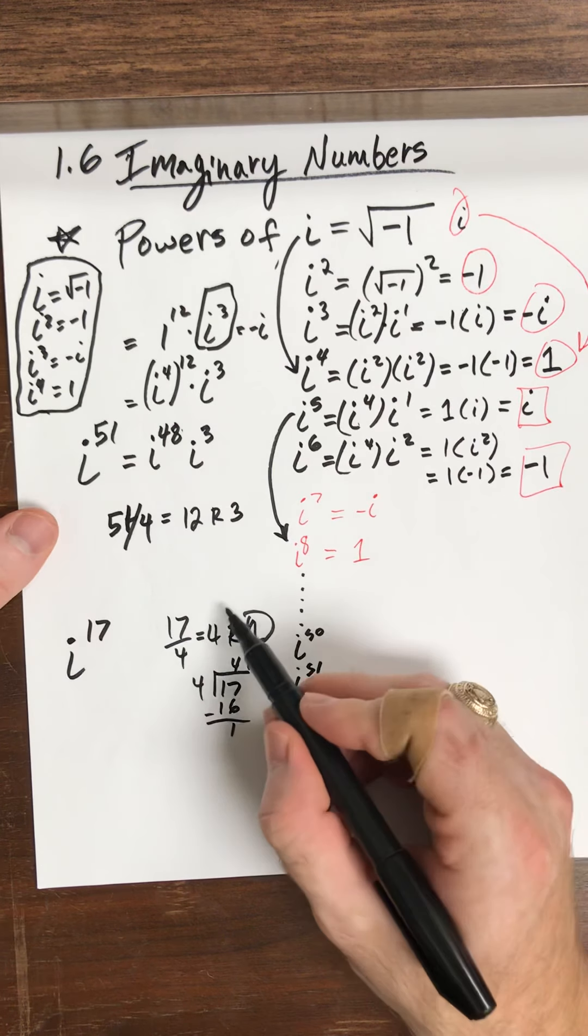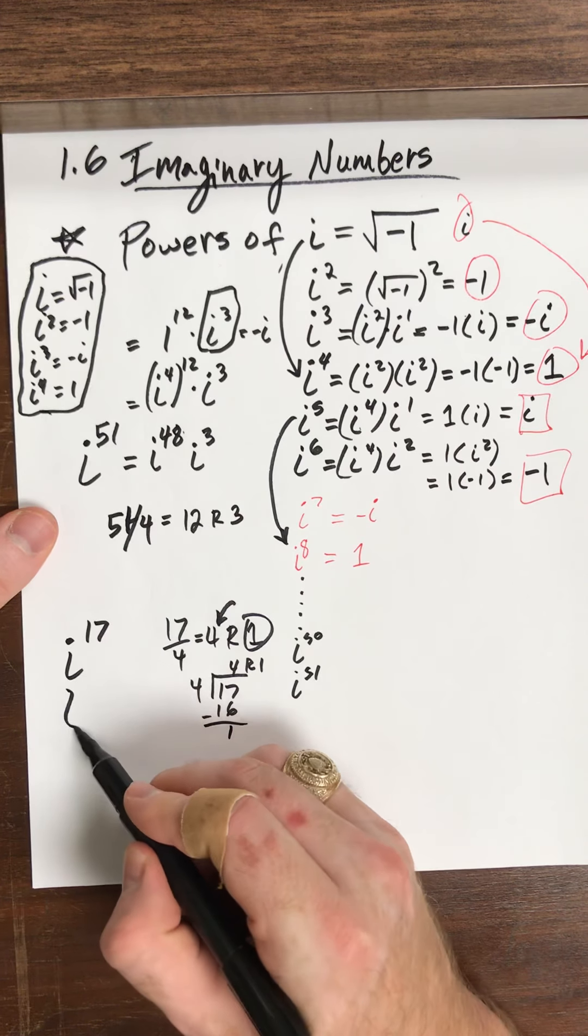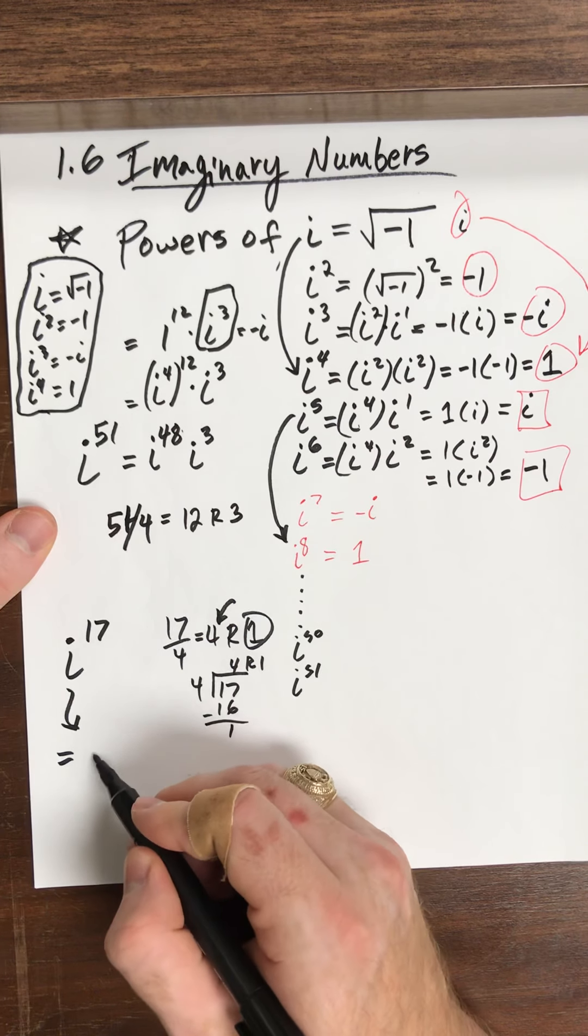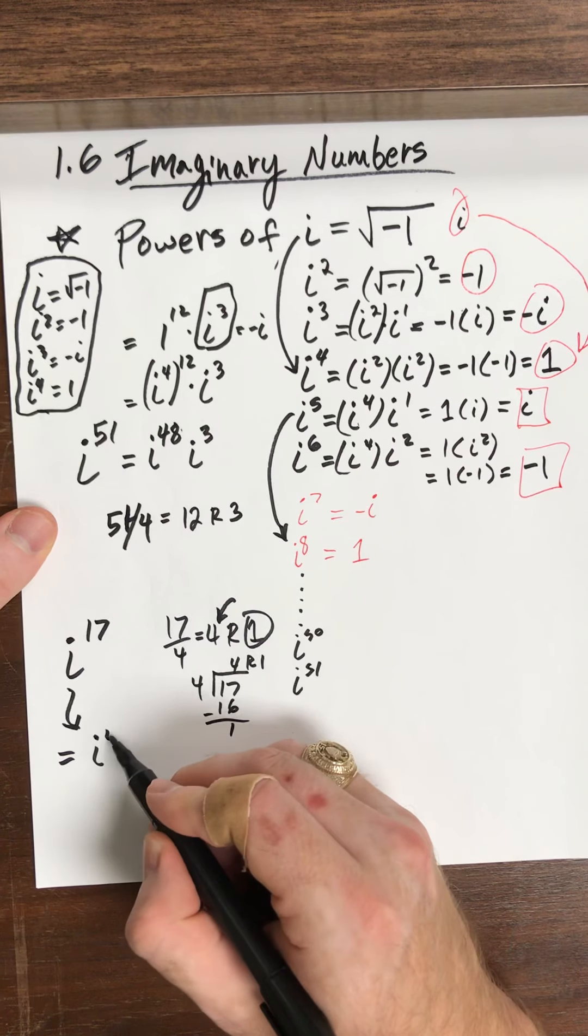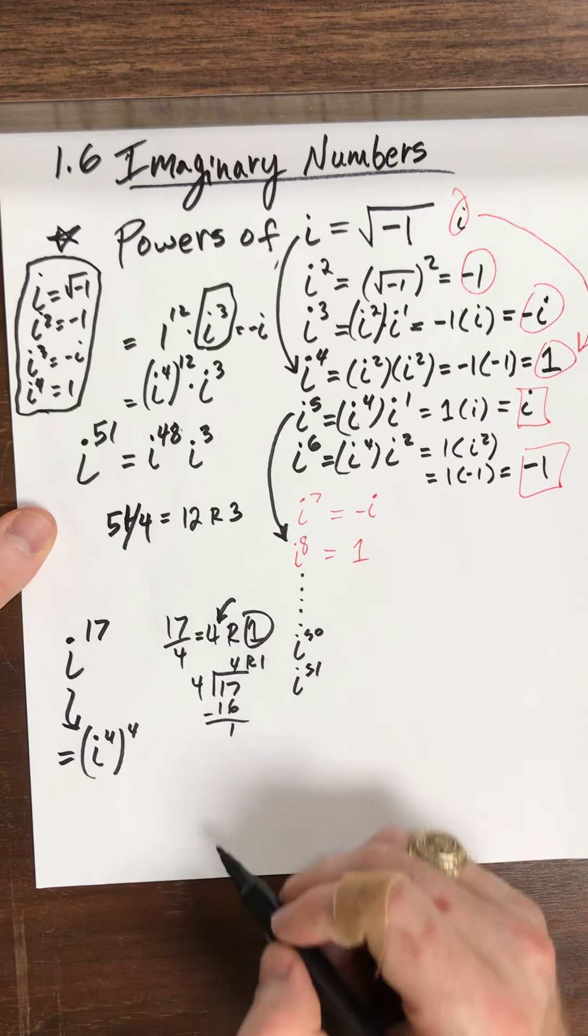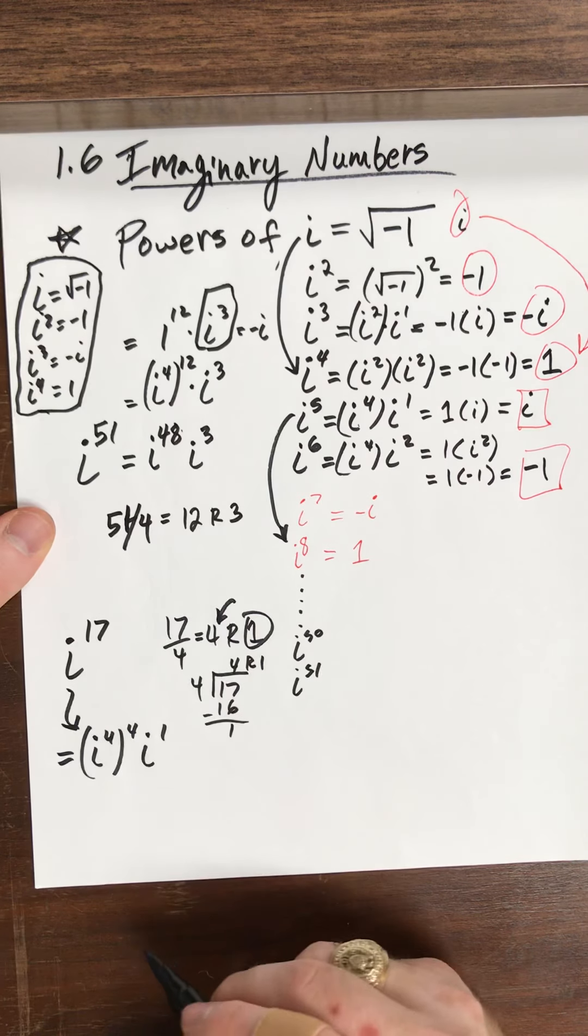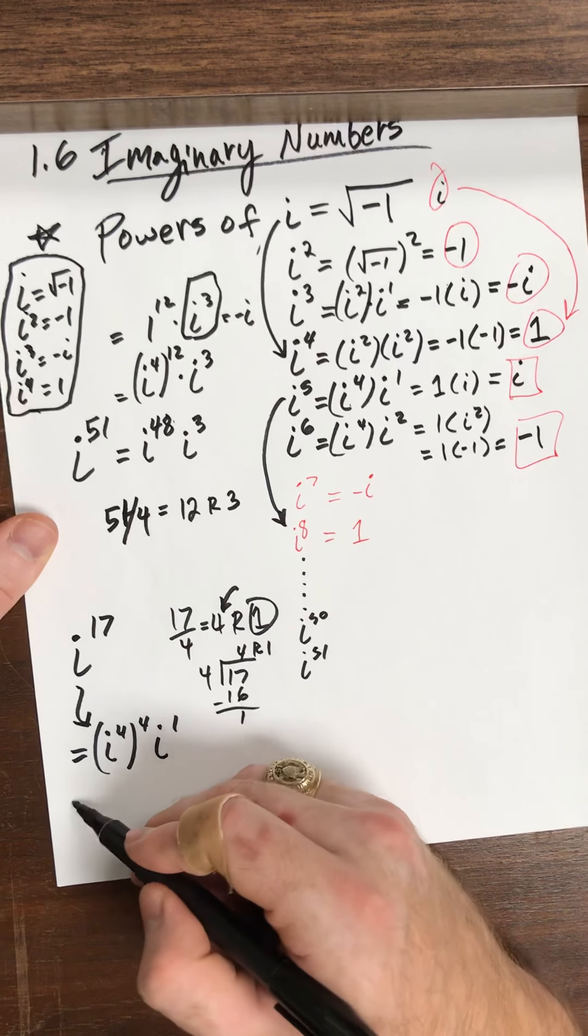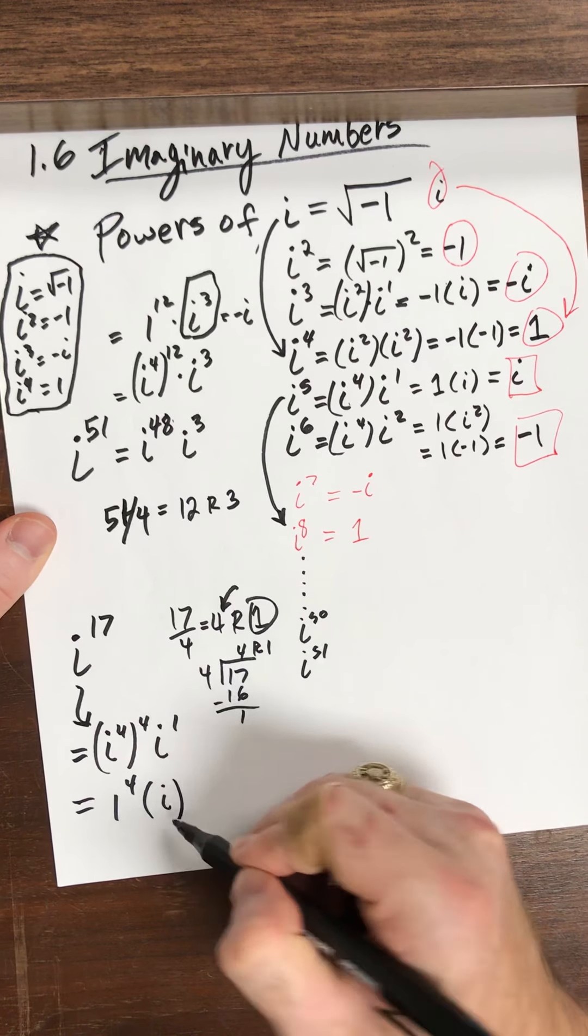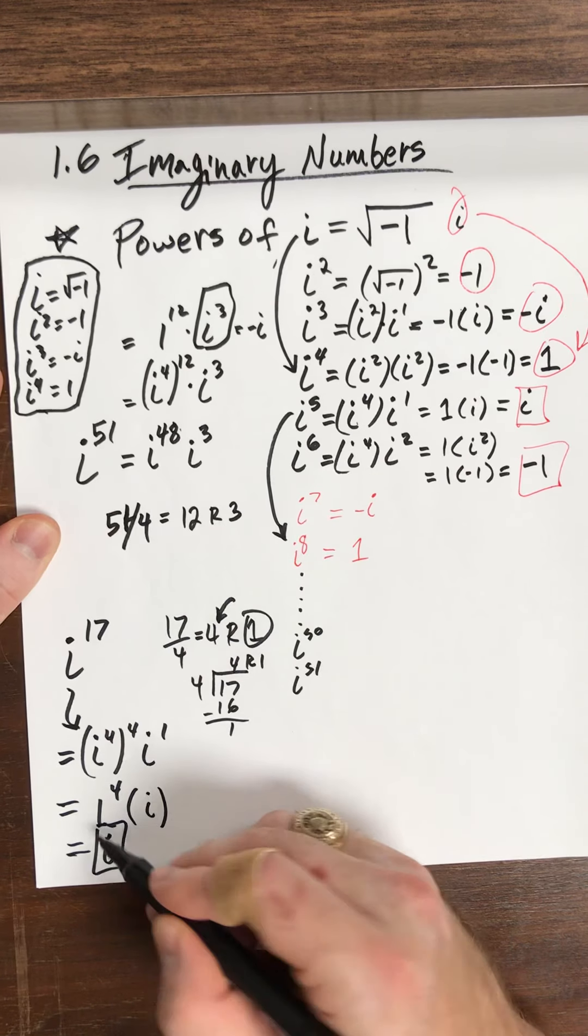So what does that mean? Those factors there of i are going to cancel to give me 1. So this becomes what? It becomes i to the 4th raised to, well, how many was it? It was 4 of them for the 16 times i to the 1. So this turns into 1, and then this is just i. So my answer here is i.